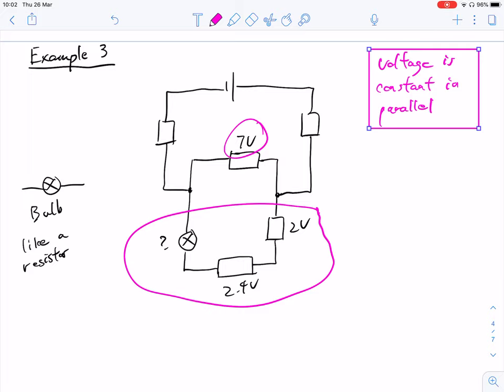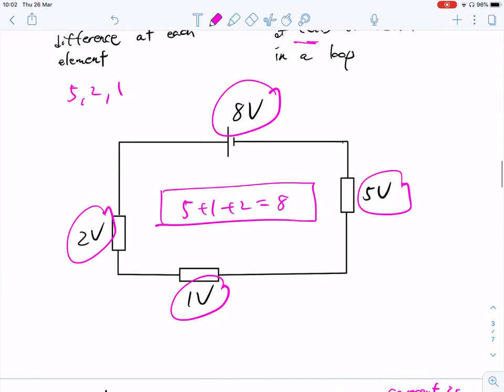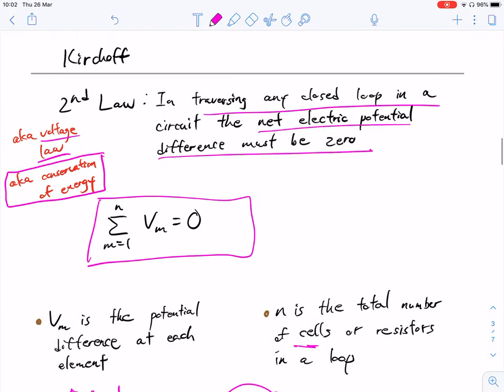Okay, so 7 volts on one side, and then the light bulb is essentially a resistor. So essentially, we know there must be 7, which means our missing piece, our missing mystery piece, must be 7 minus 2 minus 2.4. And so that's 4.4, which means there is 2.6 missing, 2.6 volts. Okay, so this is a slightly different demonstration of Kirchhoff's second law, where we just look at the reading one more time. And in traversing any closed loop in a circuit, the net electric potential difference must be 0.